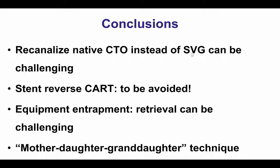The third lesson is that in cases of microcatheter tip fracture and entrapment, retrieval can be very challenging. In this case, the Pilot 200 and the microcatheter tip were entangled into the left main stent and could neither be advanced nor removed until we used the mother, daughter, and granddaughter technique. This provided very strong support for a retrograde microcatheter and Micro 14 to be advanced all the way to the left main, allowing retrieval of both the microcatheter tip fragment and the guidewire. Thank you.